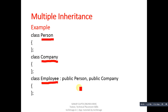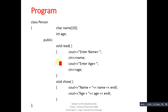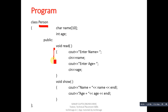The first class is Person, whose definition is available here. Its attributes are name and age. Then there is a read function — in the read function, name and age will be entered by the user. Then the show function will display the entered values on the console.